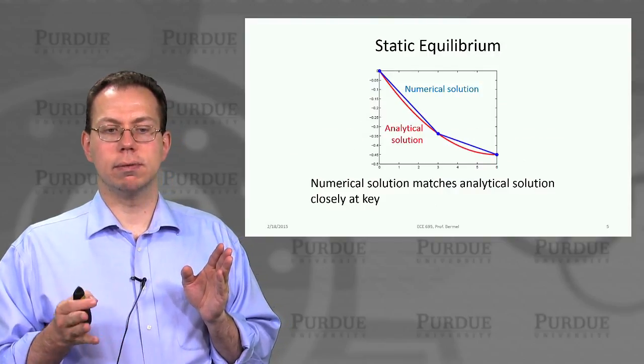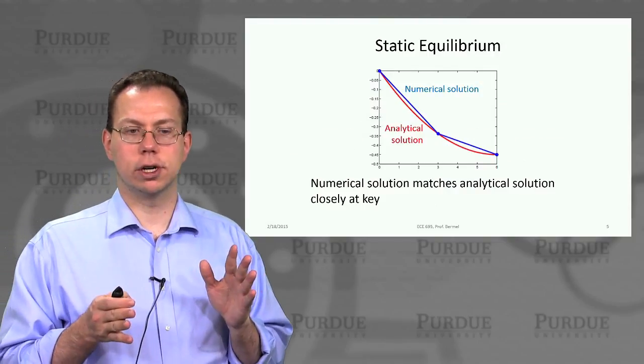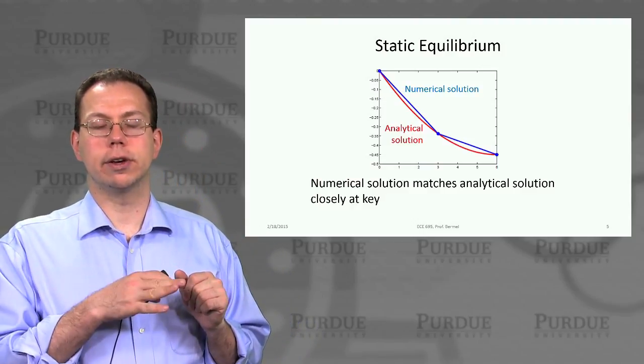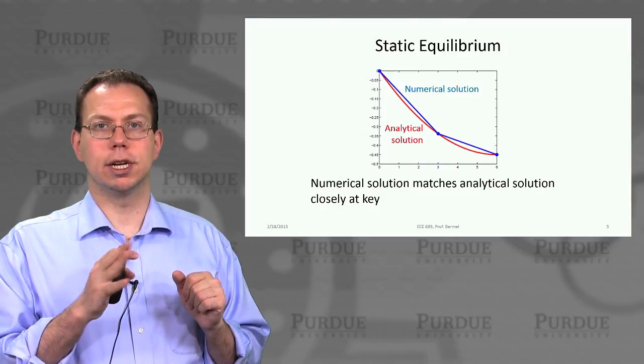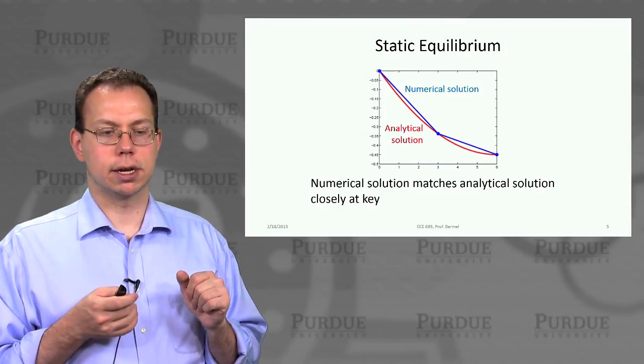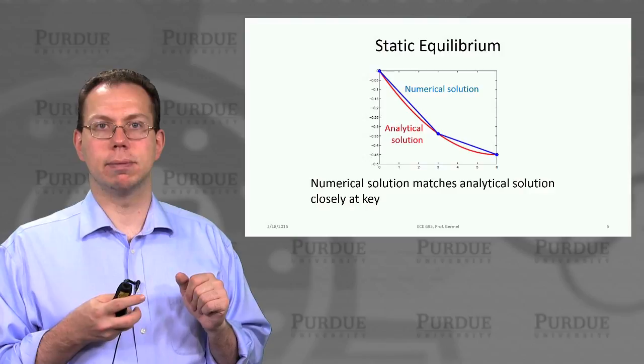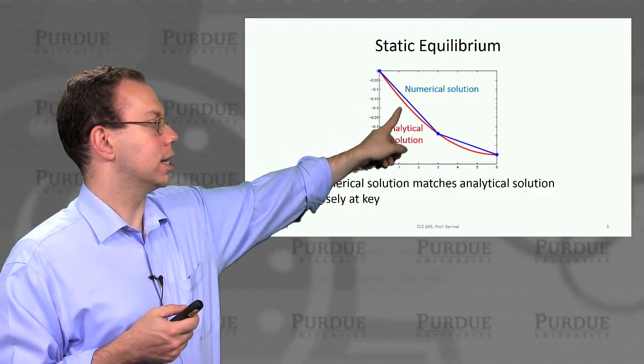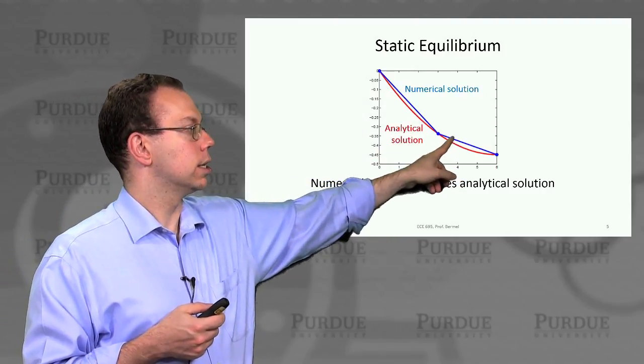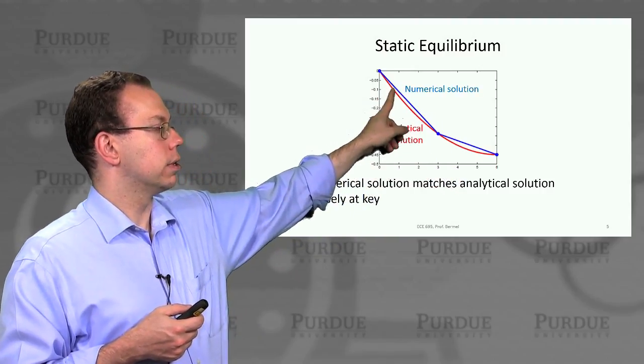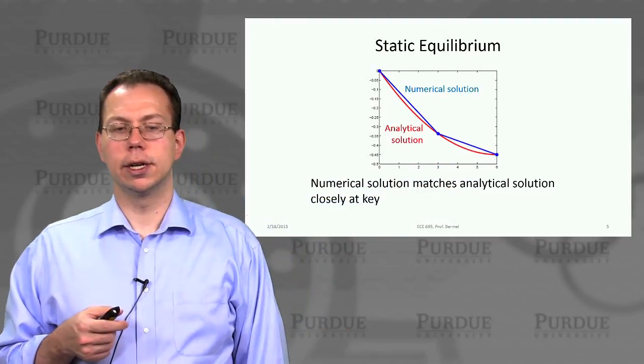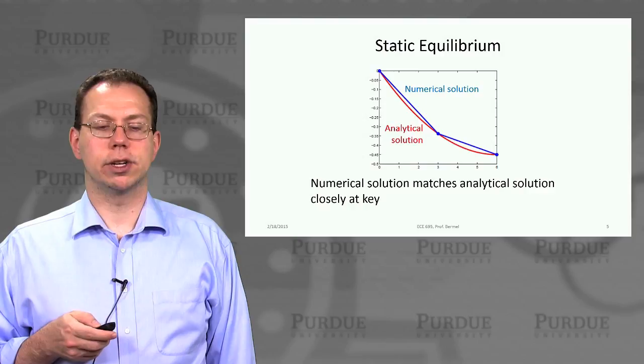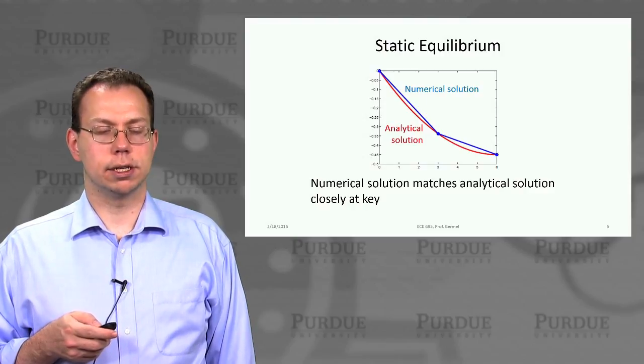When we apply the solution with a very coarse grid, we can calculate the analytical solution. This has been known for a long time. It gives us the red curve. The numerical solution with a very coarse grid looks like this. You can see at the key points it actually matches quite closely, although it doesn't match everywhere.